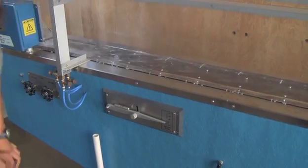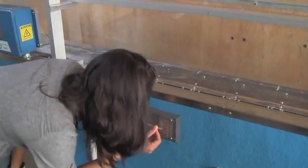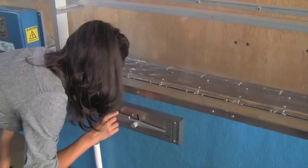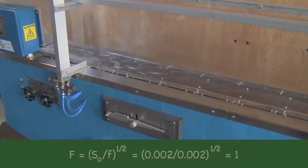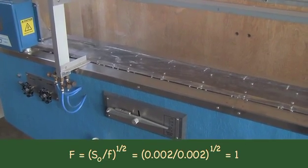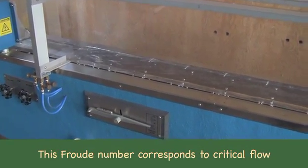Now we set the slope at 0.002 and we check the level. The calculated Froude number is 1. This Froude number corresponds to critical flow.